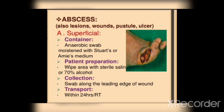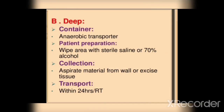For abscesses, lesions, wounds, pustules: for superficial infections, use an anaerobic swab. Clean with 70% alcohol and swab from the leading edge of the wound. For deep infections, use anaerobic transport. Aspirate material from the wall. Transport within 24 hours.